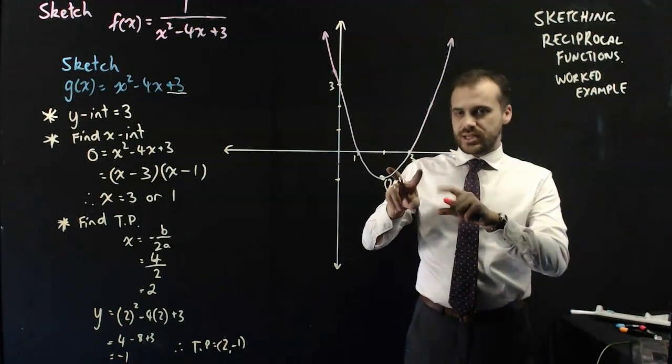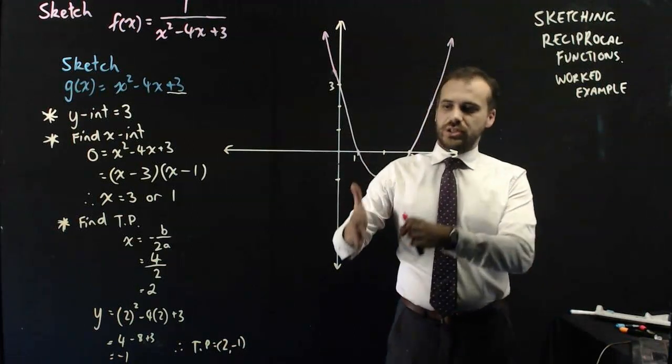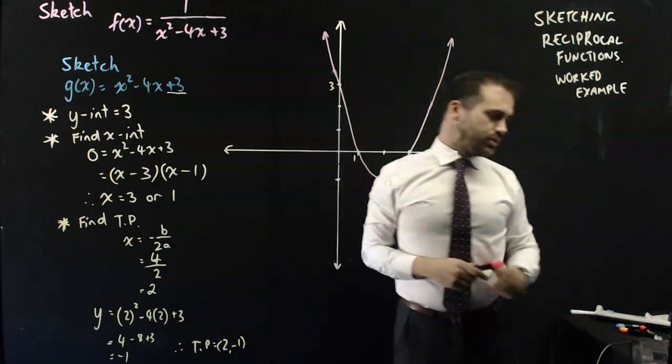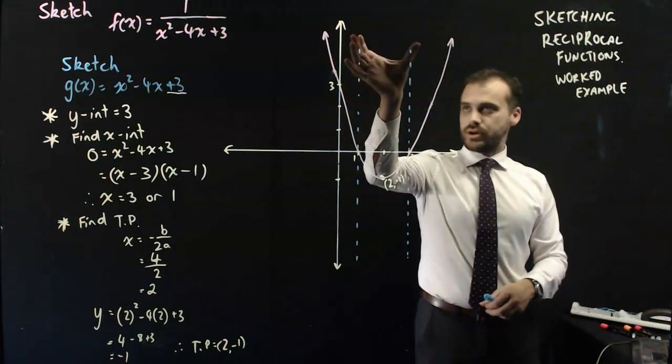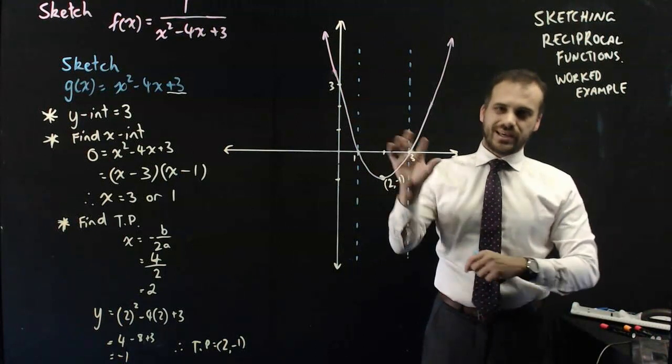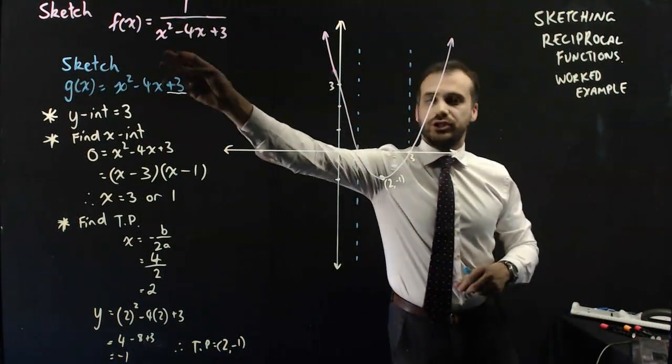Now, x-intercepts in a reciprocal function are going to be asymptotes. So I'm going to draw some dotted lines in for some new asymptotes to go there. So there are my asymptotes in line with my x-intercepts of the function on the denominator.